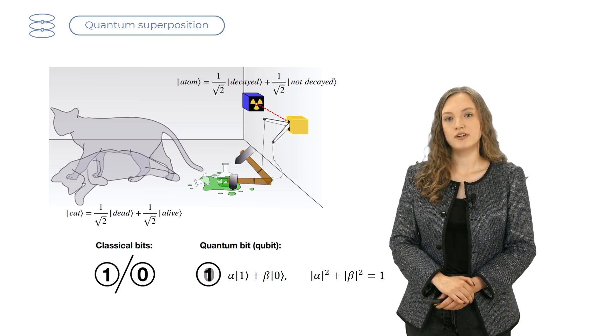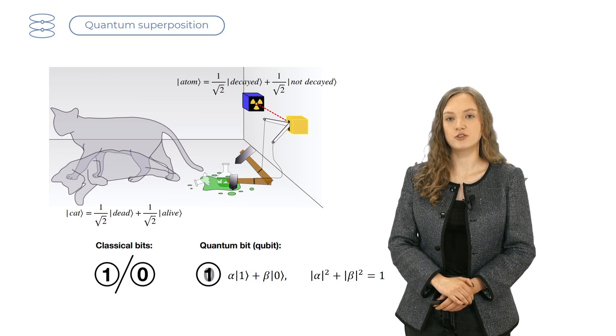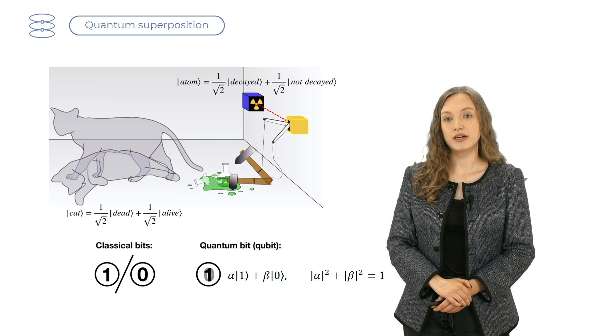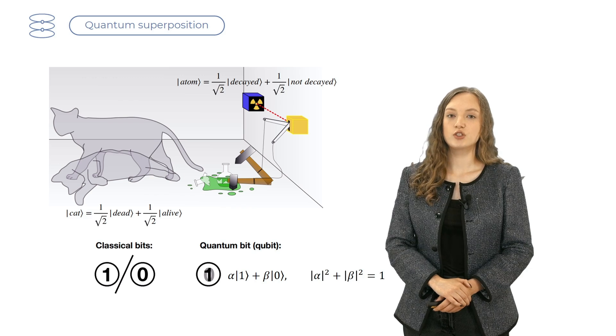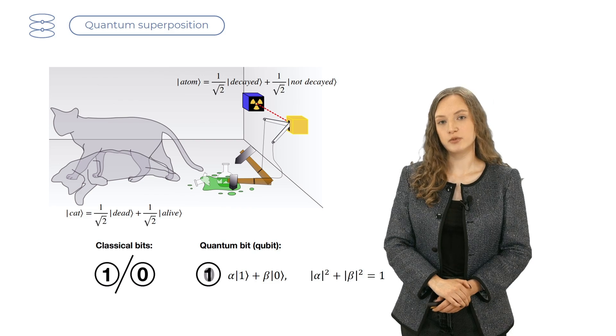In fact, quantum superposition is a very fragile thing, and it cannot persist in such large and not precisely controlled systems like our box and its contents. Every particle interaction introduces a small random factor, which destroys superposition, making only one state possible.